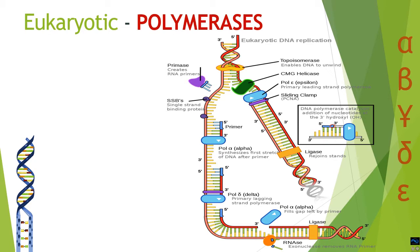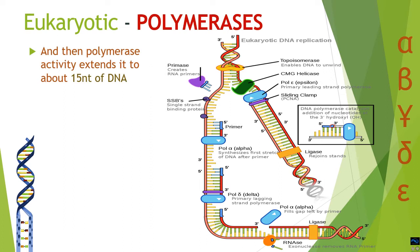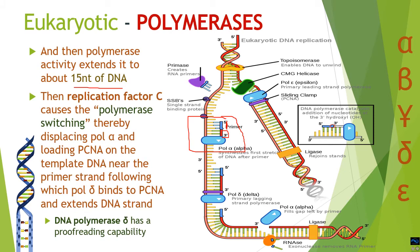After synthesizing the primer, pol alpha continues by extending the primer with about 15 nucleotides of DNA — first synthesizing the short RNA run, then extending it to approximately 15 nucleotides of DNA, at which point its synthesis stops. So pol alpha has two activities: it synthesizes the primer — once in the leading strand, repeatedly in the lagging strand — and then extends it by 15 nucleotides of DNA. What follows is called polymerase switching, carried out by a special replication factor C, which causes removal of pol alpha and its replacement with pol delta.